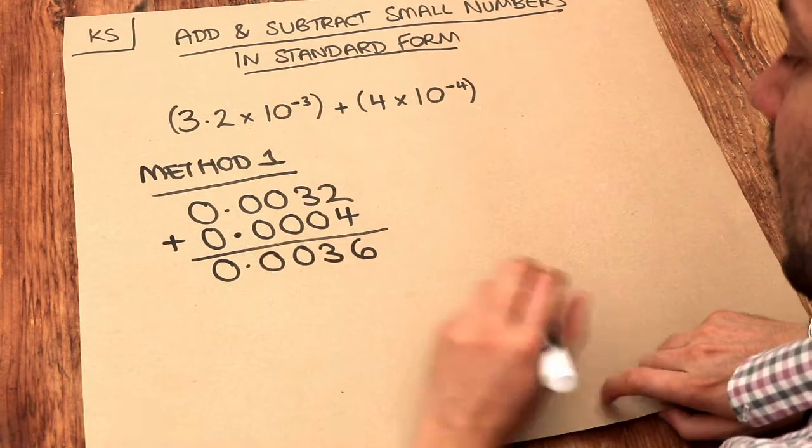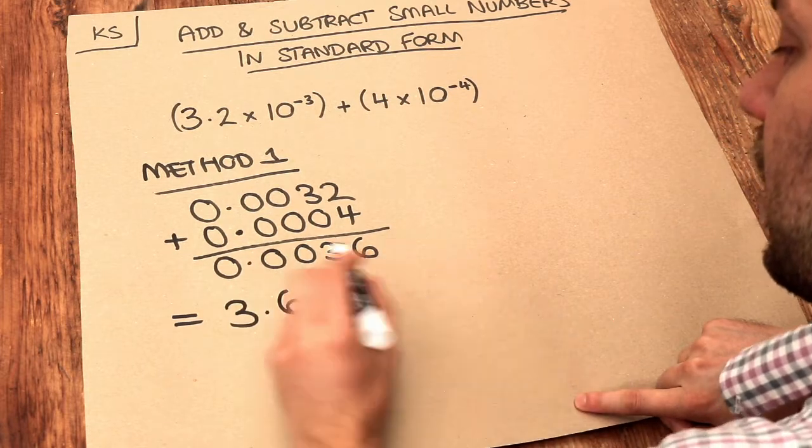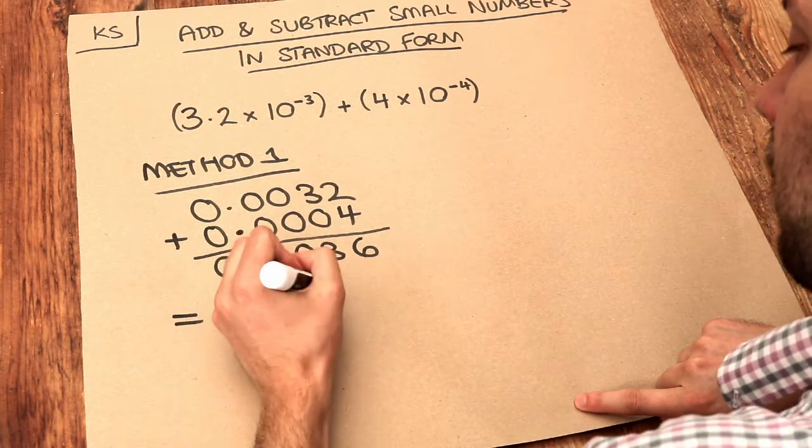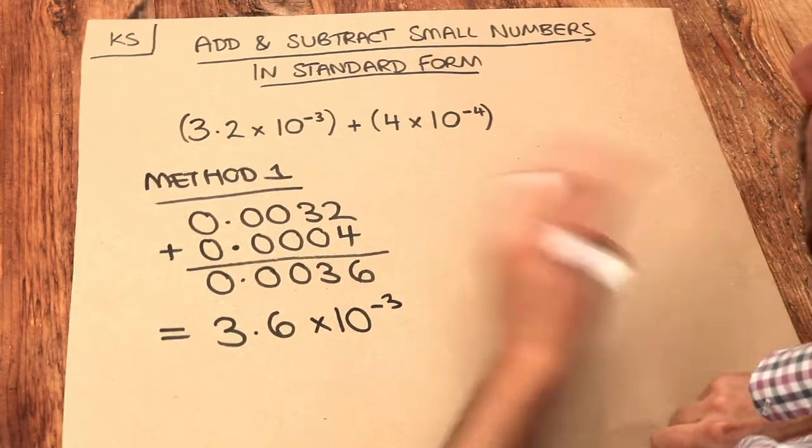And then we convert that back into standard form. That's going to be 3.6 because that's a number between one and ten. And we've got three zeros on the front, so it'll be 10 to the power of minus three. So that's method one.